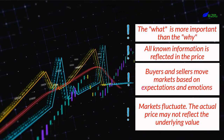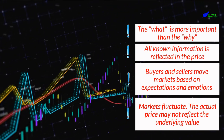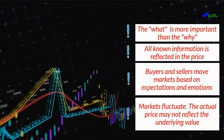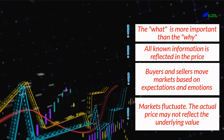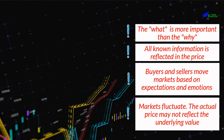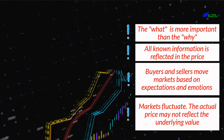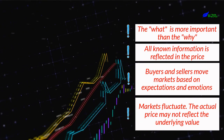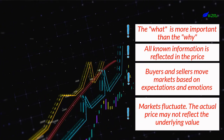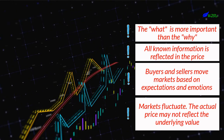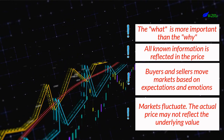Buyers and sellers move markets based on expectations and emotions — fear and greed. Markets fluctuate. The actual price may not reflect the underlying value.